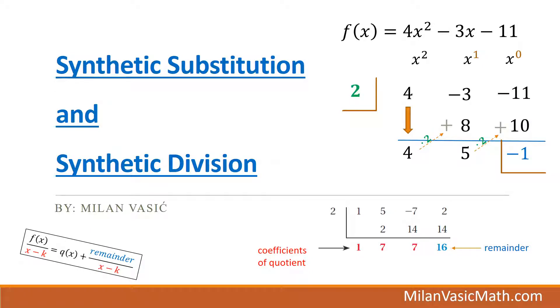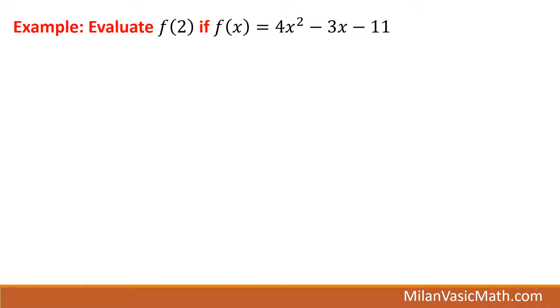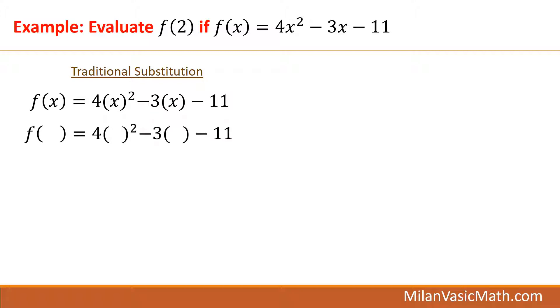Synthetic substitution and synthetic division. Let's evaluate f of 2 if f of x equals 4x squared minus 3x minus 11. Traditionally, you would write parentheses around the variable and then rewrite that equation with 2 replaced for the variable. Now just evaluate each term and simplify. We get negative 1. So f of 2 equals negative 1.